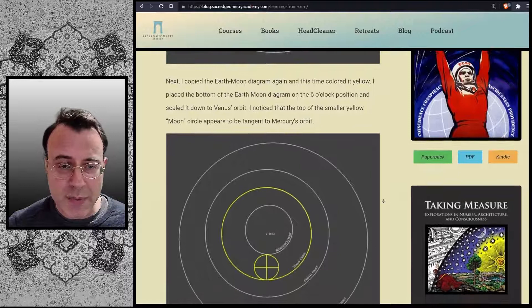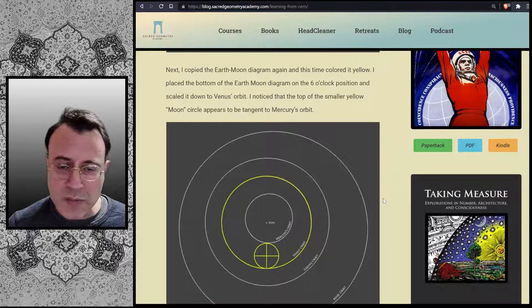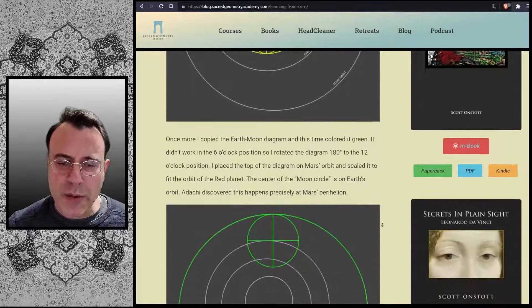Next, I copied the Earth-Moon diagram again and this time colored it yellow. I placed the bottom of the Earth-Moon diagram on the 6 o'clock position and scaled it down to Venus's orbit. I noticed that the top of the smaller yellow moon circle appears to be tangent to Mercury's orbit.